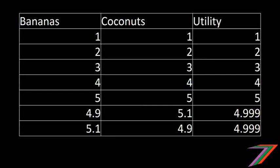In this table we have various combinations of coconuts and bananas. One banana and one coconut gives one util; two bananas and two coconuts gives two utils; three and three gives two, and so on up to five and five, which gives five utils. What if we have four-point-nine bananas and five-point-one coconuts? We get less utility. If we have five-point-one bananas and four-point-nine coconuts, again we have less utility. This indicates that having exactly the same number of bananas and coconuts gives us the maximum utility based on that utility function.